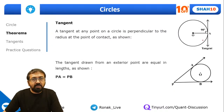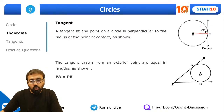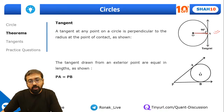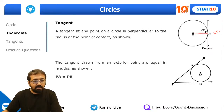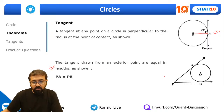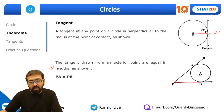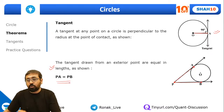Regarding tangents: a tangent is always perpendicular to the radius at the point of tangency. In the diagram, OA is the radius and OA is always perpendicular to the tangent. Also, if you take a point outside the circle and draw two tangents to the same circle, those two tangents will be of equal length — PA equals PB.